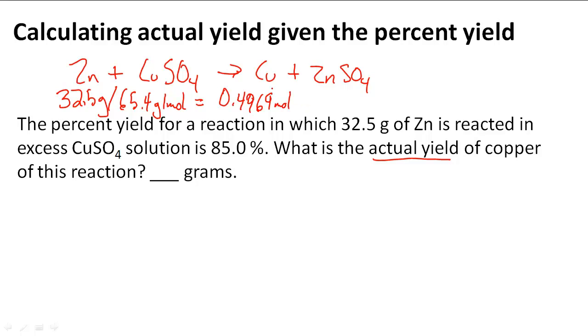Since the mole ratio is 1 to 1, we know that Cu is also going to have the same amount of moles, 0.4969 moles. This is the moles of Cu because we used the mole ratio.